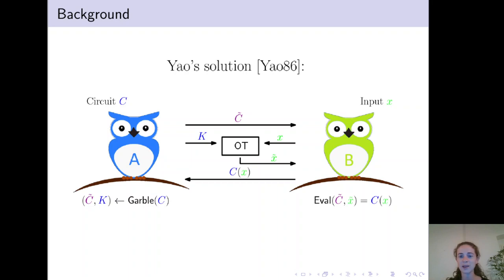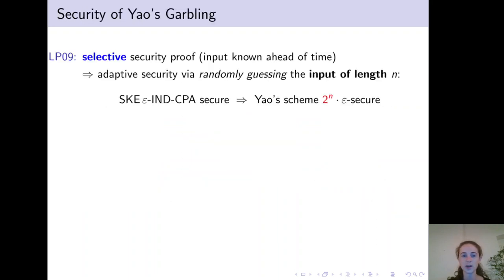While this scheme was presented already in the 80s, its security was analyzed only much later. The first security proof was due to Lindell and Pinkas in 2009, however it was in a selective setting where the input is known ahead of time.